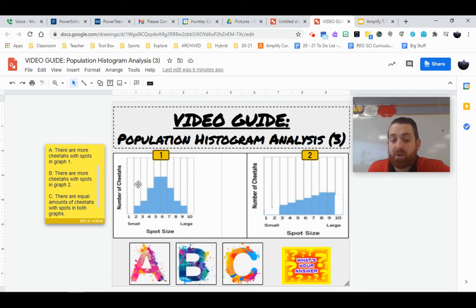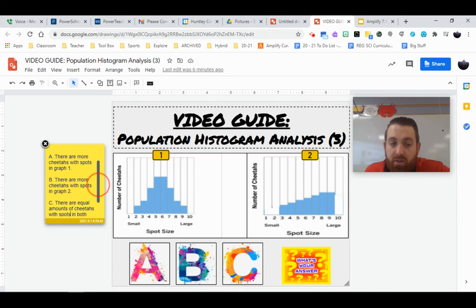And finally, we can say there's one more variation in here than there is here. So if we're thinking about which population has more cheetahs, the answer is going to be A.